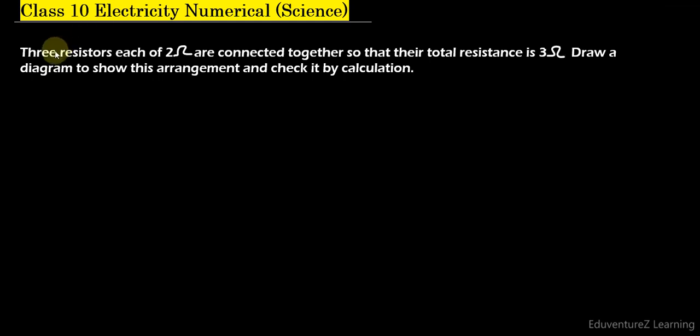Hello students, here is a question which says three resistors each of 2 ohms are connected together so that their total resistance is 3 ohms. Draw a diagram to show this arrangement and check it by calculation.